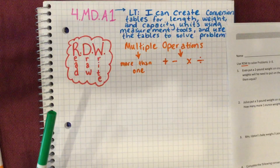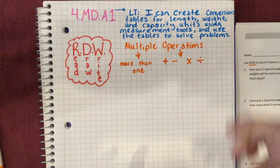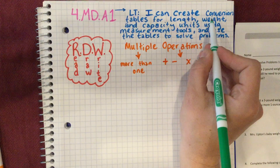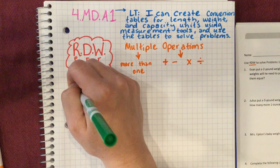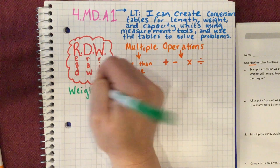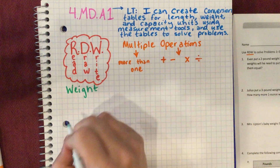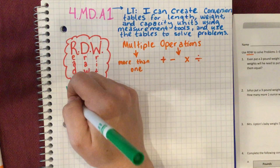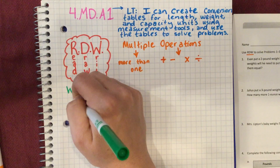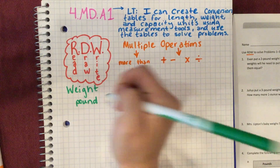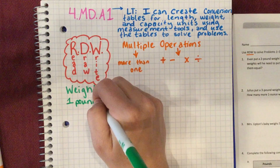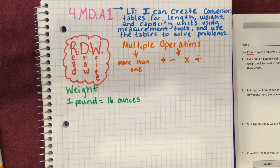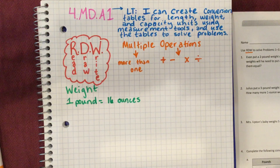The first thing we're going to talk about is converting length, weight, and capacity. Let's start with weight, since that's what comes up in these first problems. We typically measure weight in pounds and ounces. One pound equals 16 ounces — that's what we'll be using this week for weight.